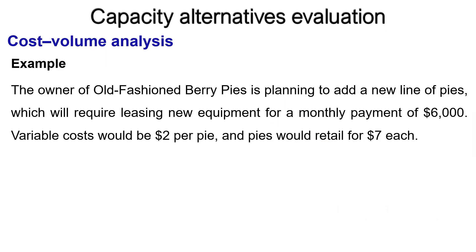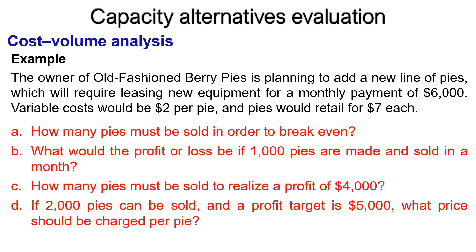Example: The owner of Old-Fashioned Berry Pies is planning to add a new line of pies, which will require leasing new equipment for a monthly payment of $6,000. Variable costs would be $2 per pie, and pies would retail for $7 each. Questions: A) How many pies must be sold in order to break even? B) What would the profit or loss be if 1,000 pies are made and sold in a month?